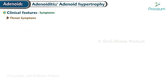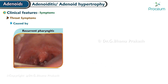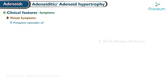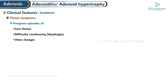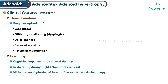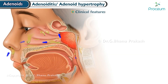Throat symptoms are caused by recurrent pharyngitis, tonsillitis, mouth breathing, frequent episodes of sore throat, difficulty swallowing (dysphagia), voice changes, reduced appetite, and potential malnutrition. General symptoms include cognitive impairment or mental dullness, bedwetting during the night (nocturnal enuresis), night terrors, and episodes of intense fear or distress during sleep.